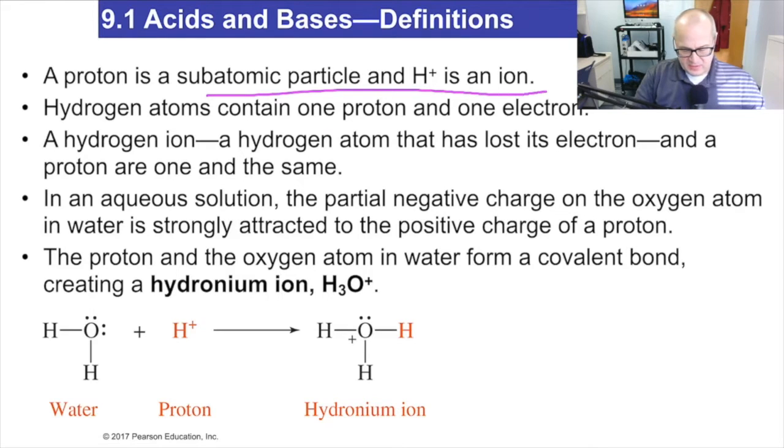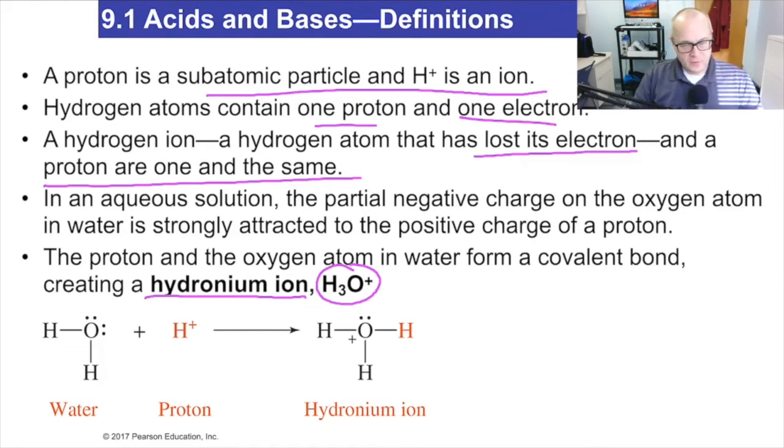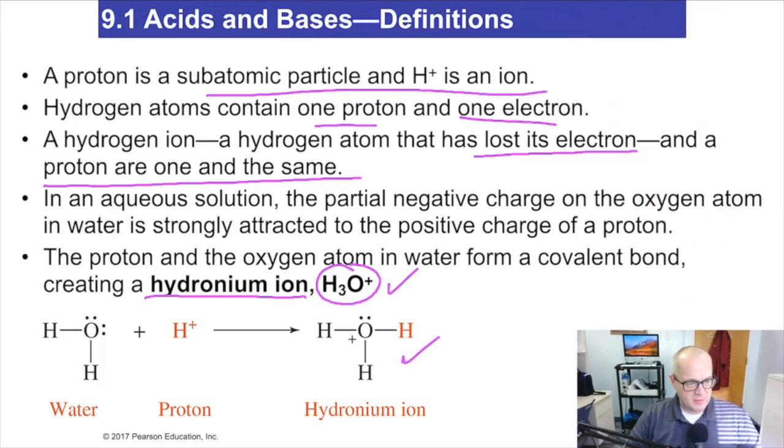Now, proton is a subatomic particle, and H plus is an ion. Hydrogen atoms contain one proton, one electron. If that hydrogen atom were to lose its electron, then the protons are one and the same. So, basically, H plus and a proton are the same thing. That's what I'm trying to get across to you. When you have an acid reacting in water, you get H3O plus. This is known as hydronium. So that's really all you need to know from this slide. Hydronium, H3O plus. When an acid reacts with water, you form hydronium. Very important thing to remember.